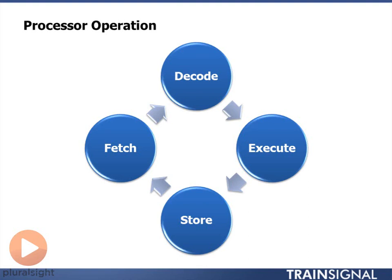In the decode part of the cycle, we figure out what type of command needs to be executed. There's a certain set of built-in instruction sets or operational codes — commands that can be implemented by the processor. Once we figure out the command type, we move to the next step: execute the command, or perform the appropriate calculation, because that's what the processor is doing — processing calculations.